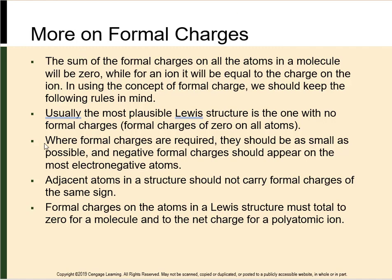The most plausible Lewis structure is the one with no formal charges — a formal charge of 0 on all atoms. However, where formal charges are required, they should be as small as possible. Negative formal charges should appear on the most electronegative atoms. For example, we would not expect a formal charge of +1 near a fluorine — that would be unlikely. Adjacent atoms should not carry formal charges of the same sign. Formal charges must total to 0 for a molecule and to the net charge for a polyatomic ion — for example, NH₄⁺ should sum to +1.